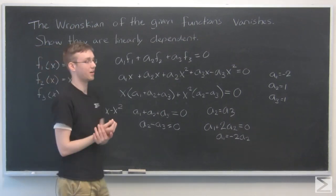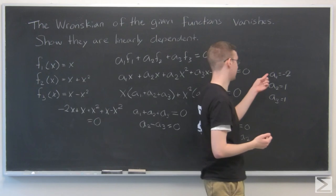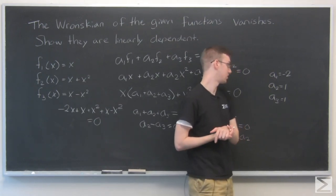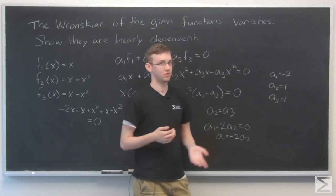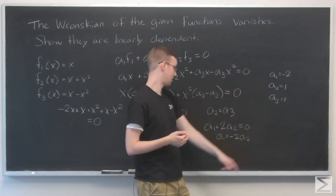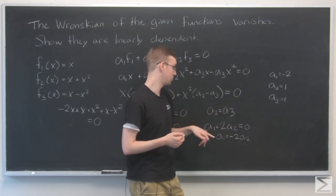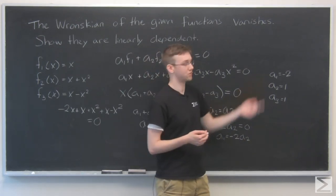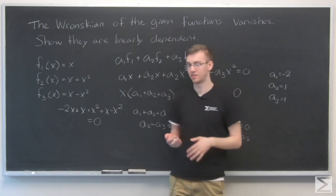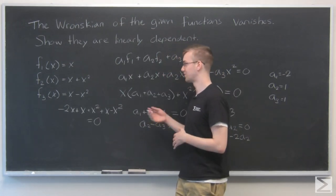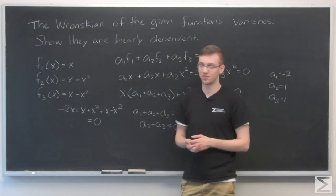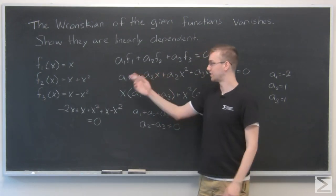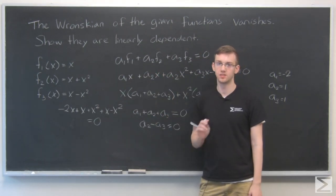We have found a combination that works: a1 = -2, a2 = 1, a3 = 1. We could have chosen any multiples of that—if a2 = 2, we'd get a3 = 2 and a1 = -4. But it doesn't matter. We've found a combination where this equation equals zero. Therefore, we have proved that these three functions are linearly dependent.